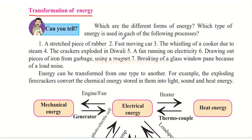Which type of energy is used in each of the following processes? The first example is a stretched piece of rubber. When you stretch a rubber band, a form of energy is stored in it, and that is because of mechanical energy. A fast moving car is because of mechanical or electrical energy. The whistling of a cooker due to steam happens when there is a lot of pressure because of the steam accumulated in it, so this is because of heat energy.